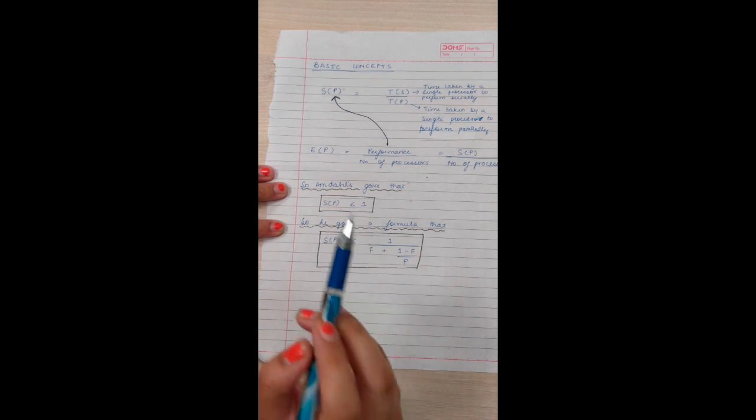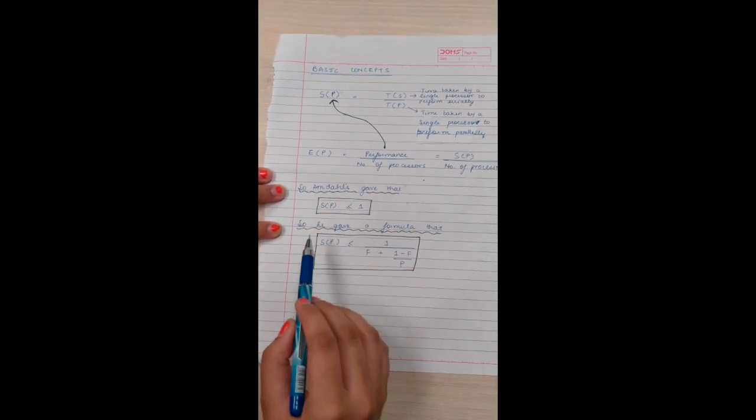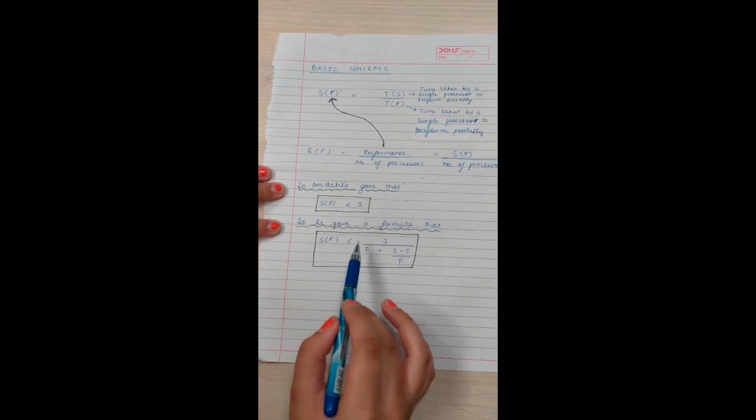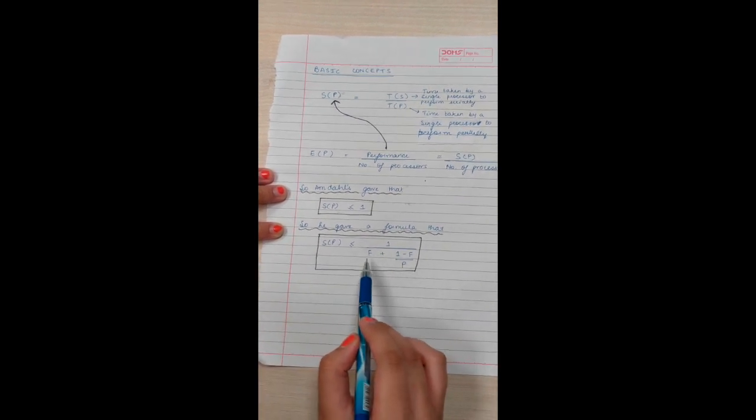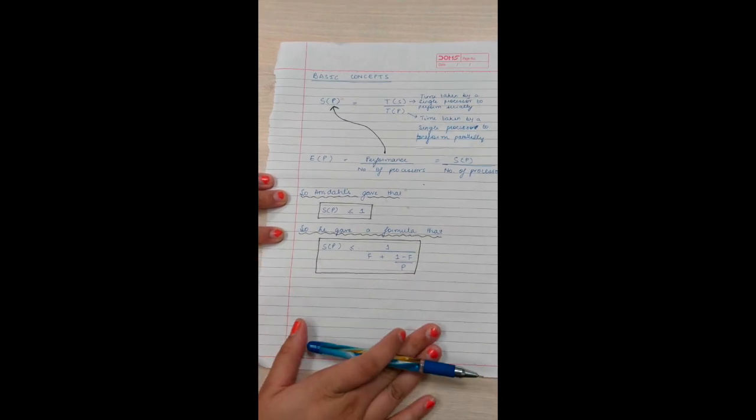Basically, what Amdahl gave is that the speed up is always less than or equal to 1. And he gave this basic formula that speed up is less than or equal to 1 divided by (F + (1 - F)/P), which we will look at in a later time.